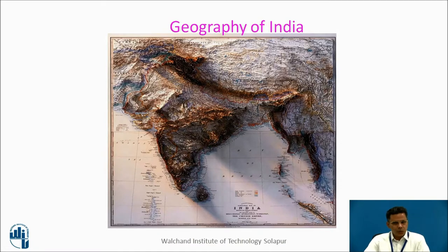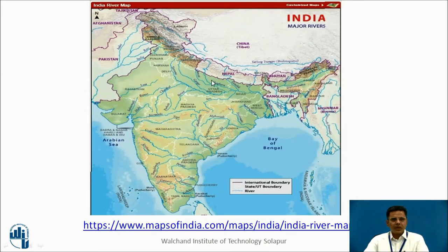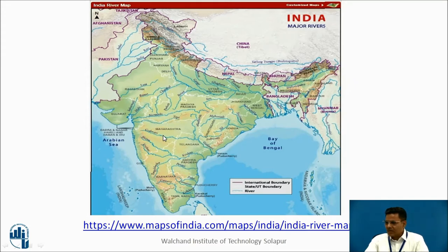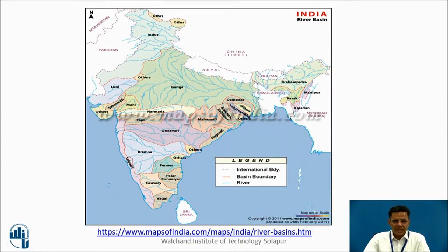According to geography, the rivers flow and have defined their own channels. This map gives us an idea about the major rivers. This is the Ganga Basin. Brahmaputra enters here in Arunachal Pradesh. This is the Narmada River, this is the Tapi River. Godavari originates from Nashik-Trambakeshwar, Bhima from Bhimashankar, Krishna from Mahabaleshwar. This is the Tungabhadra River, this is the Kaveri River. These are the river basins of India: Ganga Basin, Narmada Basin, Tapi Basin, Godavari Basin, Krishna Basin, Penar Basin, and Kaveri Basin.